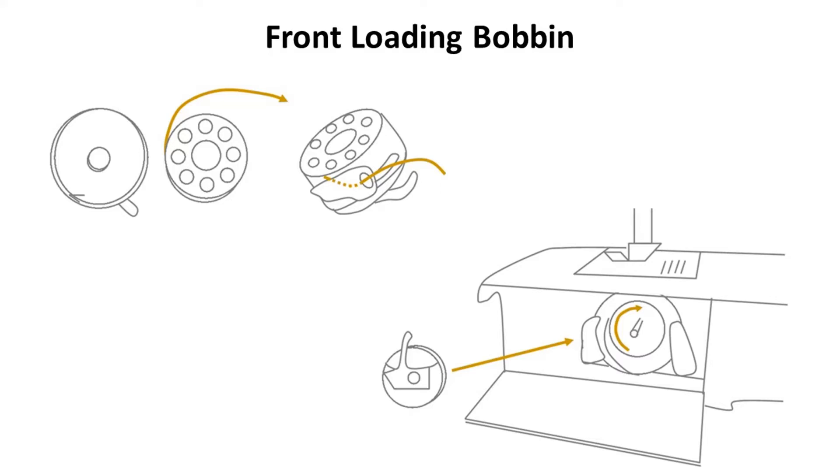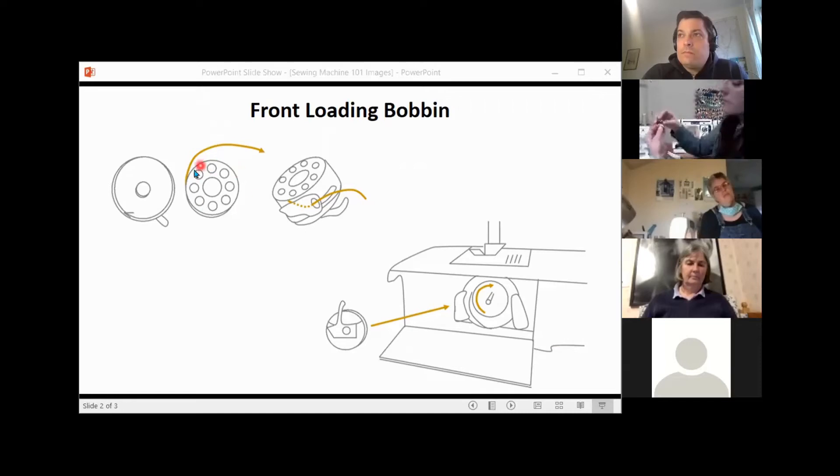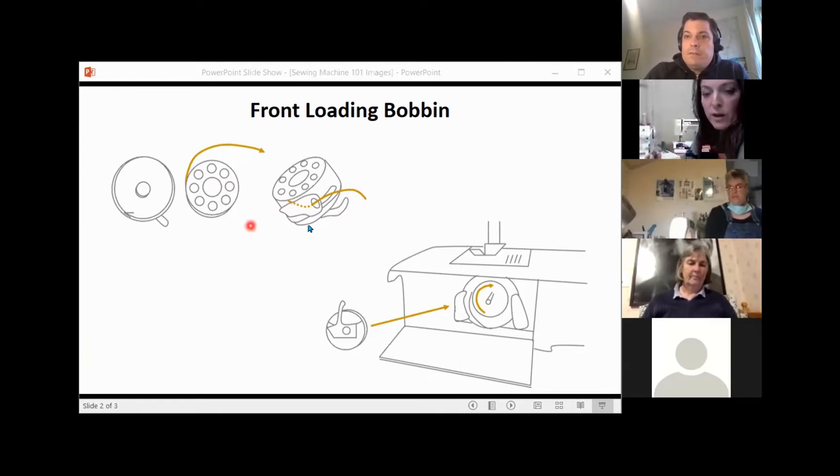When you look at that bobbin case, you will see there's a really small slit in the top of it. You place the bobbin in the case, grab it like that, and then pull it up into the center. If you have your owner's manual, it'll walk you through this as well, but if you look down at the graphics, it makes more sense if you have a front-load bobbin case.